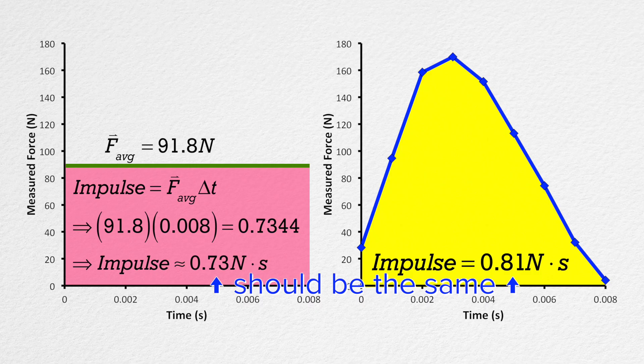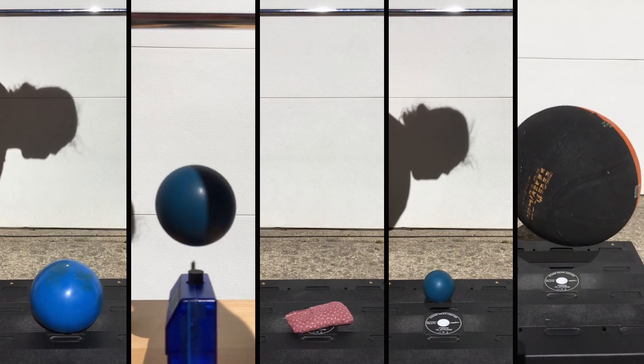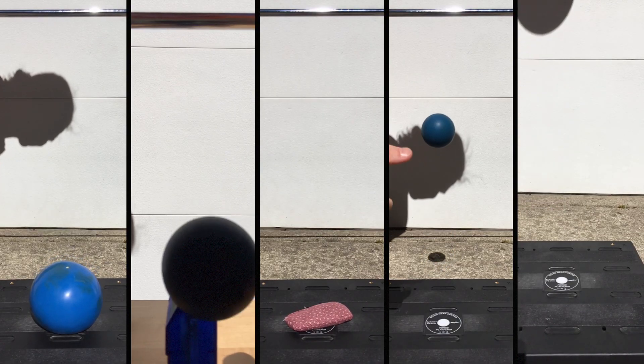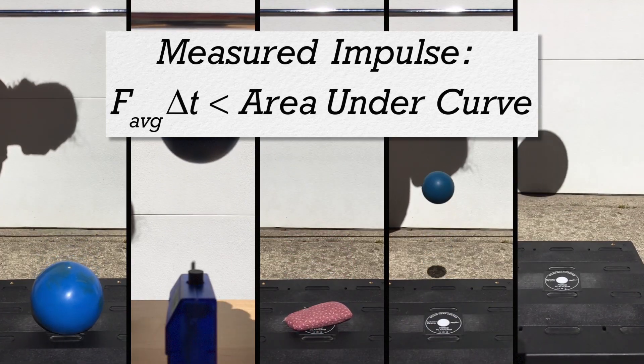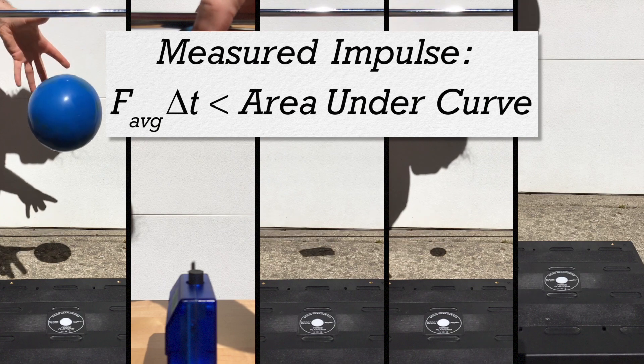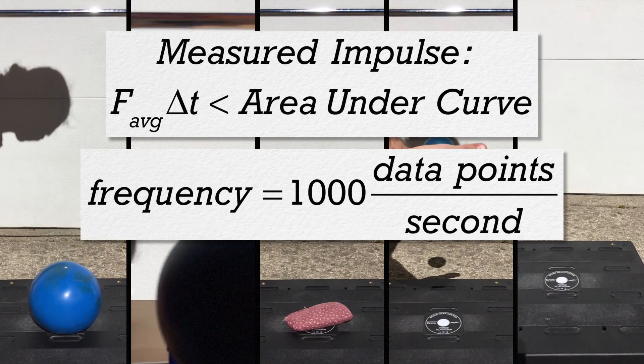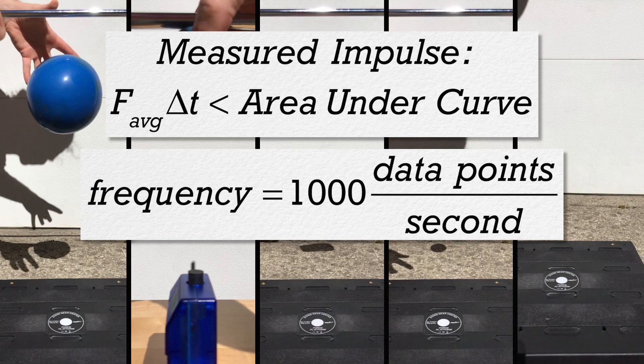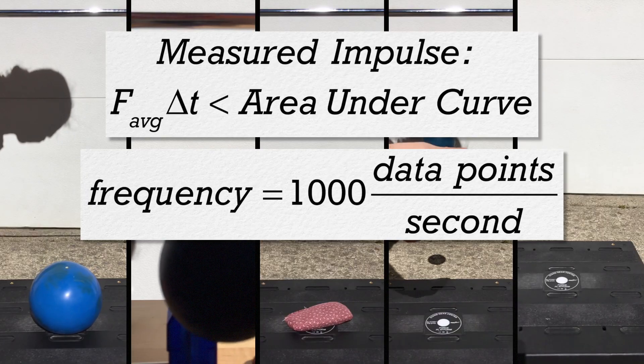Now, I actually tried many different objects and even a different force sensor, and in every instance, the impulse calculated using the average force and the change in time was always smaller than the area under the curve. Now, I attribute this to the fact that we were trying to measure the force 1,000 times every second, and this force platform from PASCO probably isn't quite up to that task.